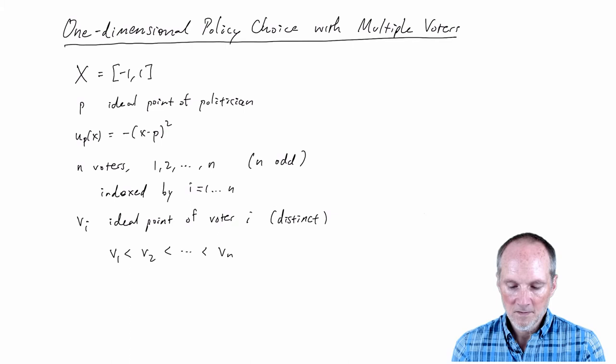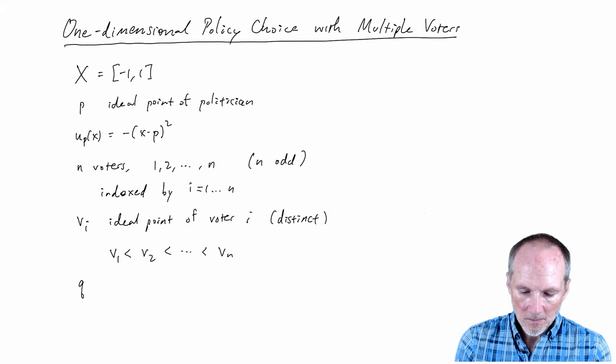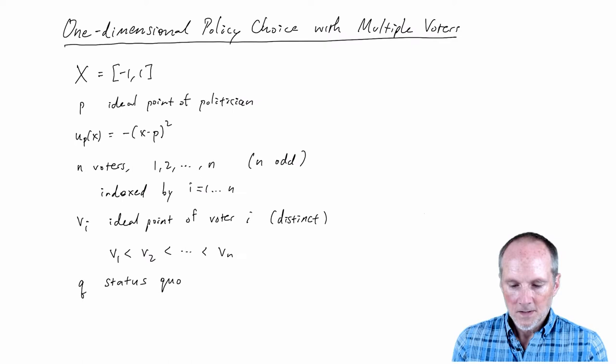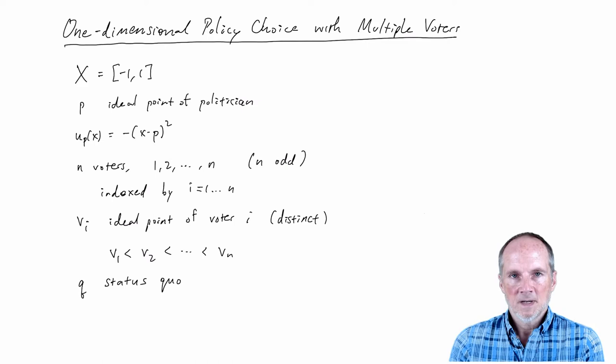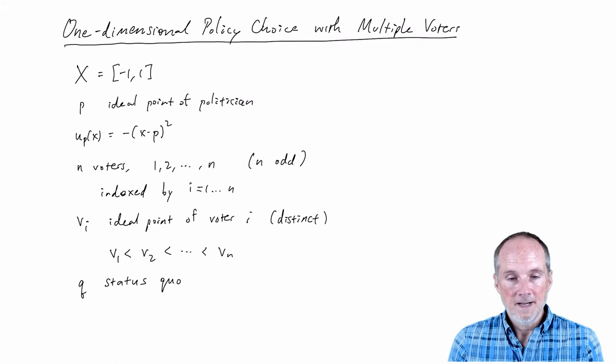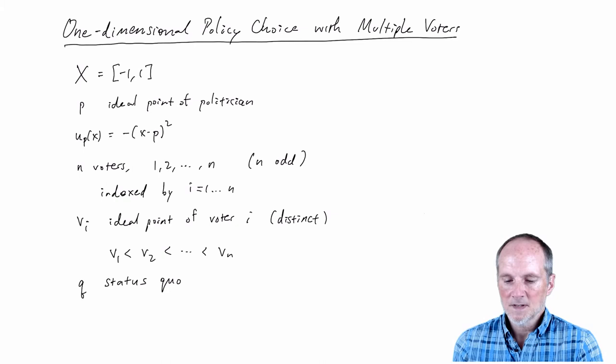We still need a status quo. The model has the politician making a policy choice P, and this committee of voters then holds a vote — let's assume it's simultaneous, even by secret ballot. Each voter looks at the proposed policy and compares it to the status quo.